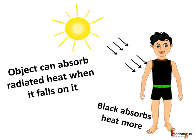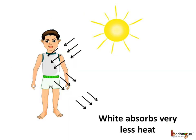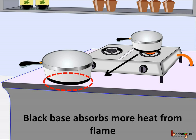Black objects absorb more heat while white objects absorb much lesser heat. That is why we wear black or dark-colored clothes in winter, which absorb more heat and keep our body warm. Light-colored or white clothes absorb less heat, so people wear white clothes in summer. This is also the same reason why the base of cookware is colored black — so that it absorbs more heat from the flame and cooking gets done faster.